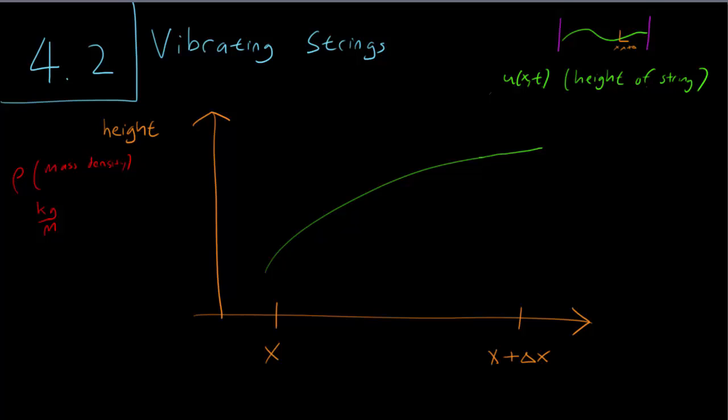We also want to introduce the tension force T. The string has tension on both ends. For instance, at the left end of the little section here, we'll draw a tangent vector. There's going to be a force pulling on the string in this direction, and this force is going to be of magnitude T. There's a force pulling on the left end and also a force pulling on the right end. So T is called tension.